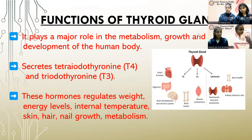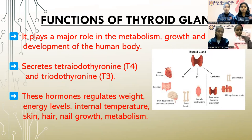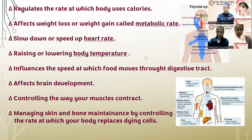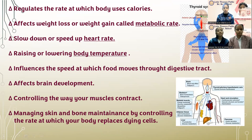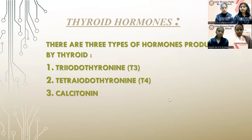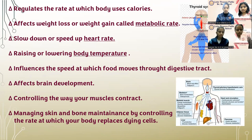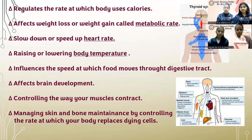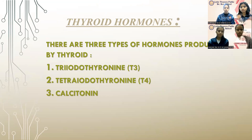Functions of the thyroid gland. It plays a major role in metabolism, growth and development of the human body. It secretes T4 and T3 hormones which regulate weight, energy levels, internal temperature, skin, hair, nail growth and metabolism. It regulates the rate at which the body uses energy, and affects weight loss or weight gain, called metabolic rate. It slows down or speeds up the heart rate, lowers or raises the body temperature, and influences the speed at which food moves through the digestive tract. It affects brain development, controls the way your muscles contract, and manages skin and bone maintenance by controlling the rate at which your body replaces dying cells.